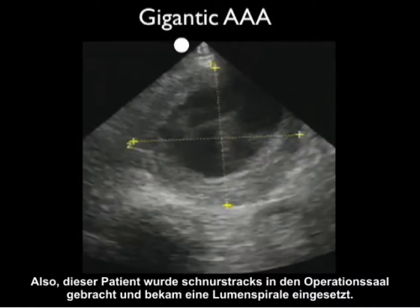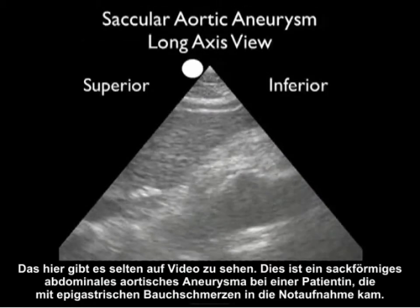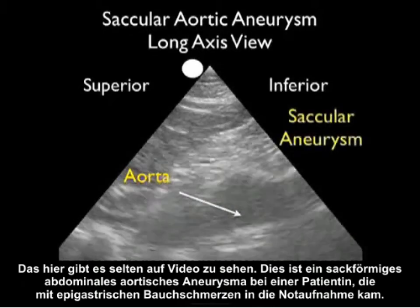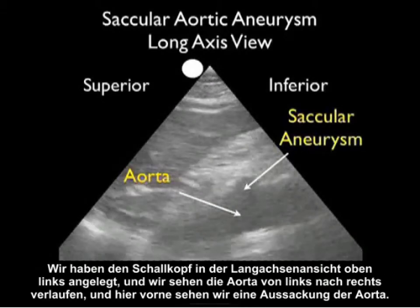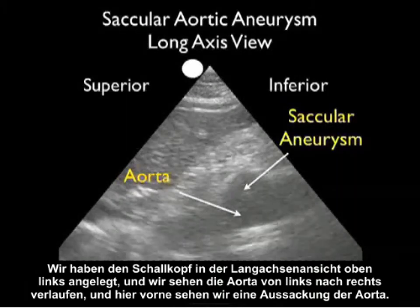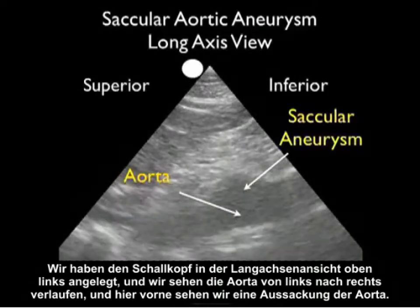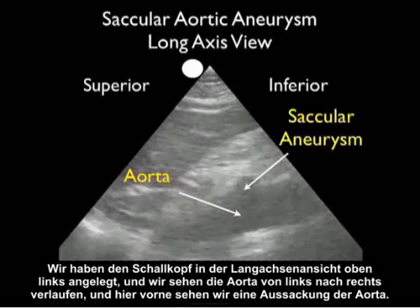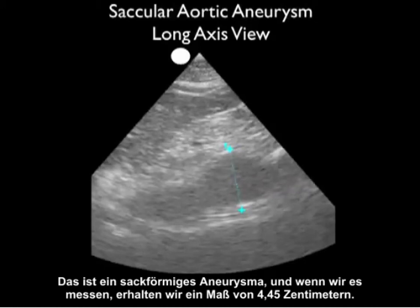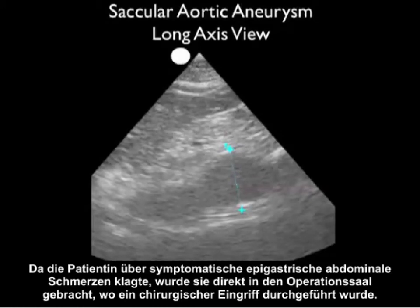This is a rare video clip showing a saccular abdominal aortic aneurysm in a patient who presented to the ED with epigastric abdominal pain. We have the probe positioned in a long axis configuration superior to the left, and we see the aorta running from left to right with an outpouching coming anteriorly — that's the saccular aneurysm. As we measure it, we come up with 4.45 centimeters. As the patient was symptomatic with epigastric abdominal pain over this aneurysm, she went directly to the operating room for operative repair.